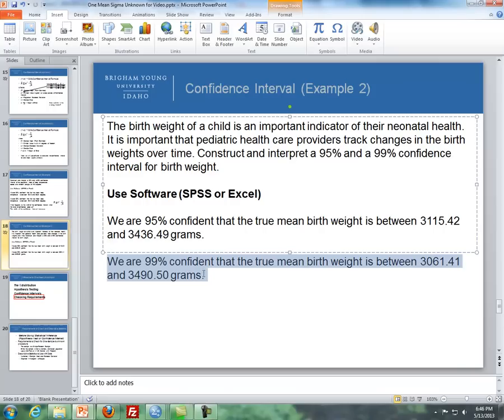And then if we're doing 99% confidence interval, we say we're 99% confident that the true mean birth weight is between 3,061.41 and 3,490.5 grams.